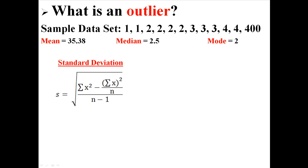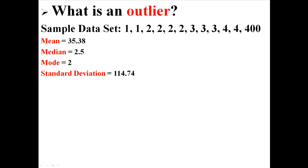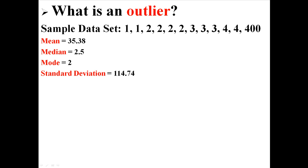And now we're going to calculate the standard deviation for this new data set. So we find the three things we need: the sum of all x squared and n. We plug those things in and we find the standard deviation to be 114.74. So these are the four values: the mean, median, mode, and standard deviation of this data set, which includes the outlier.